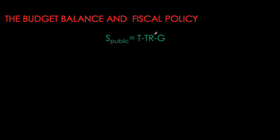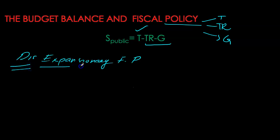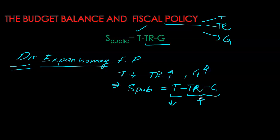Let's look at the relationship between our budget balance and fiscal policy. Budget balance is simply taxes minus transfers minus government purchases — the government's tax receipts minus all of its spending. All three components of the budget balance are also tools of fiscal policy, so any changes in discretionary fiscal policy automatically affect the budget balance. If the government uses discretionary expansionary fiscal policy, it reduces taxes, increases transfers, or increases government spending, causing the budget balance to move into a deficit.